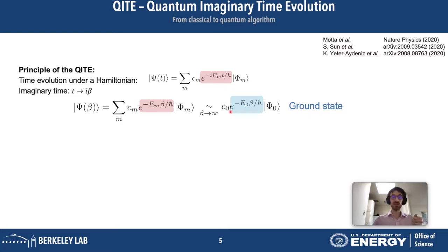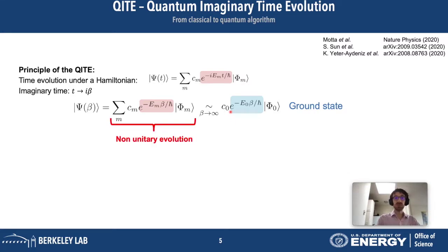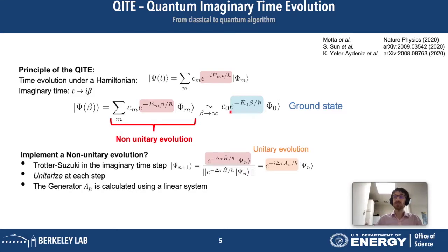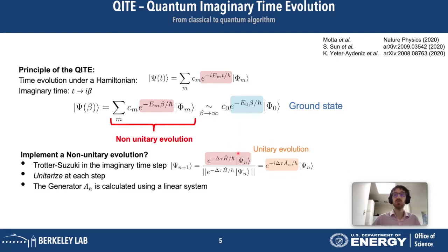Now we're trying to make it into a quantum algorithm. One thing to be careful of is that you cannot perform a non-unitary evolution on a quantum computer easily. The solution was found by Motta and others, where you unitarize each step. This turns out to be not too hard, as you can find the effective unitary evolution simply by solving a linear system.